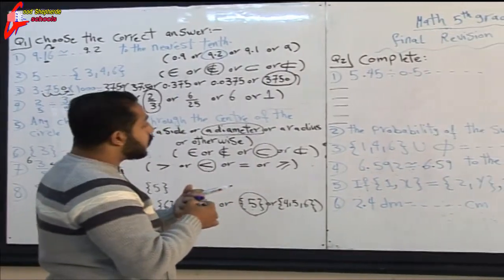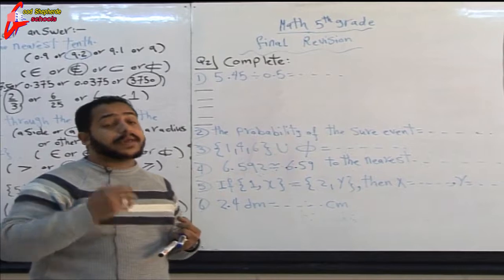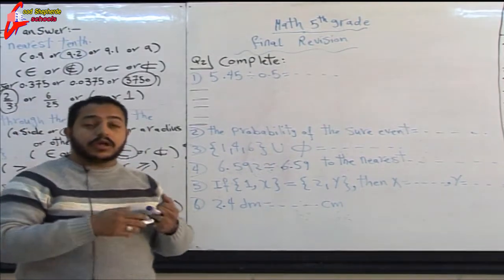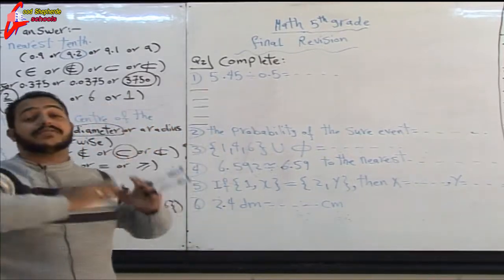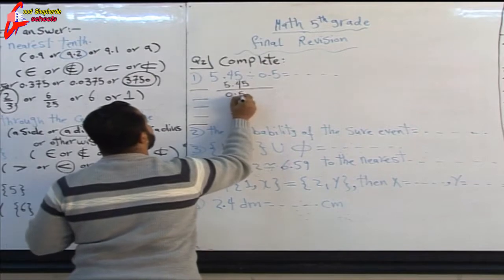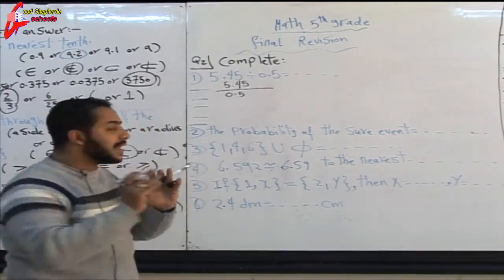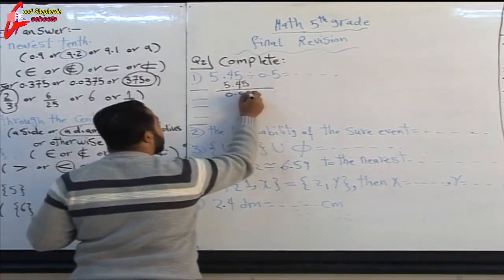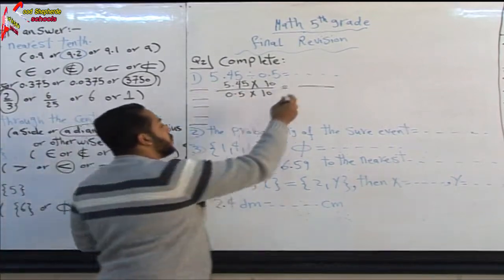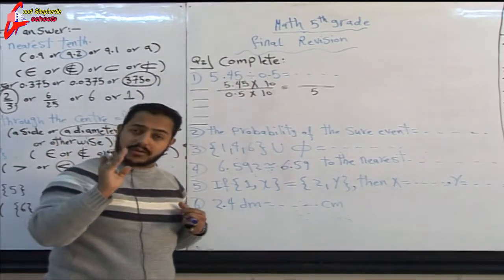Now, question two — complete: 5.45 divided by 0.5. To divide a decimal by another decimal, we convert to whole numbers. Writing as a fraction: 5.45 over 0.5. The denominator has one decimal place, so multiply both numerator and denominator by 10. 0.5 times 10 becomes 5, and 5.45 times 10 becomes 54.5.